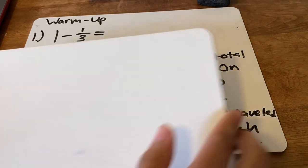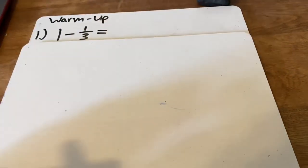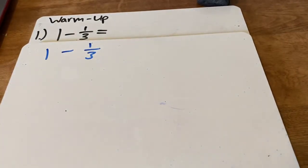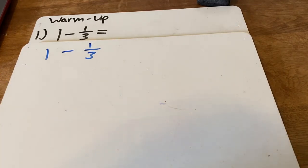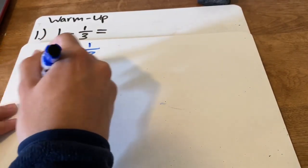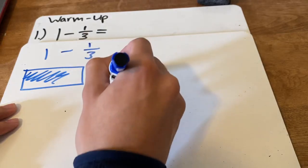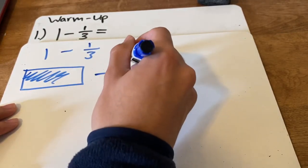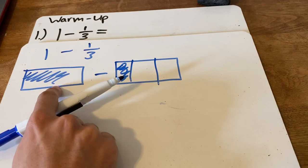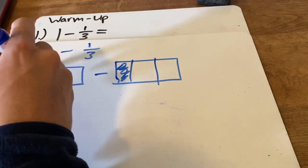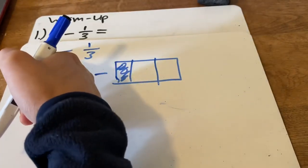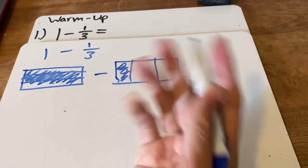Hopefully you were able to answer the question. Let's start with number one: one whole minus one over three. A similar problem to what we did yesterday. Let's draw it. I have one whole minus one third. Only one of them is colored in. For this box, I'm going to add three rows — one, two, three. For the whole, I don't have a denominator, so I just leave it blank.